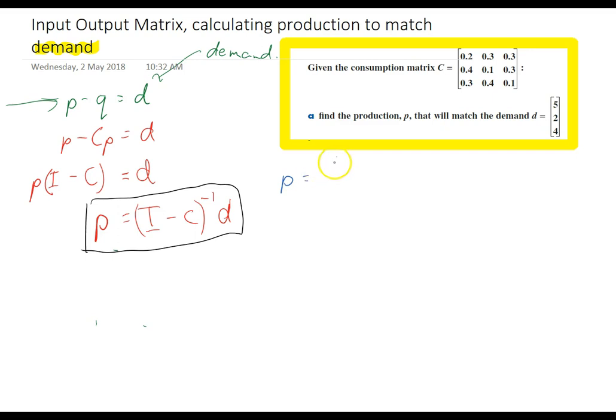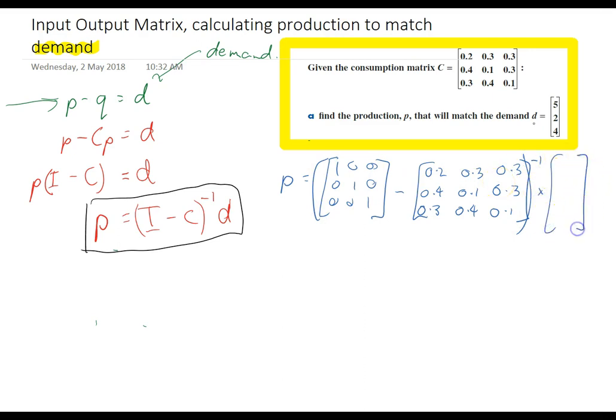Now, our identity matrix is going to be 1, 1, 1 minus the consumption matrix which we can see here all to the negative 1 so all of that to the negative 1 and then multiplied by our demand matrix 5, 2, 4 those are the things we want.